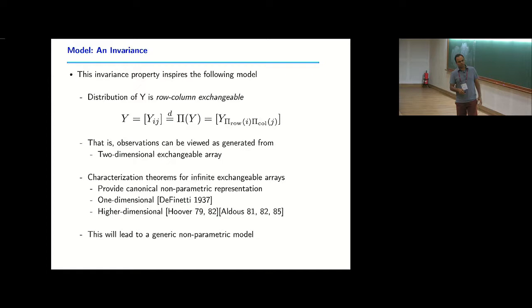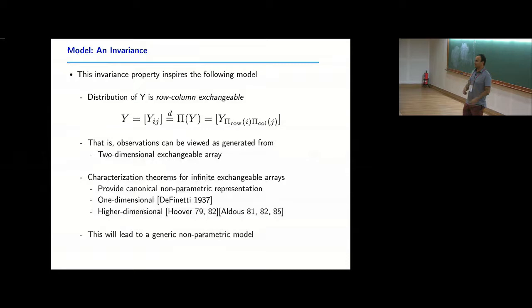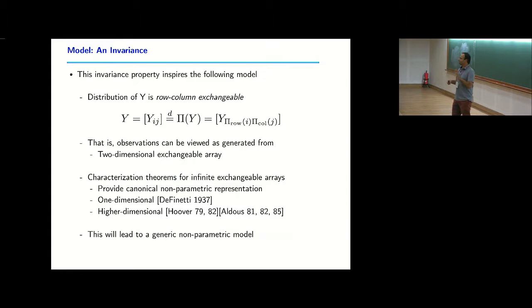When you look at the two-dimensional setting, a clean parametric or non-parametric model comes out. There's also a nice queuing connection — Kingman was behind this result. It has connections to modern Bayesian statistics, the paint boxes and all that stuff. These are all related.